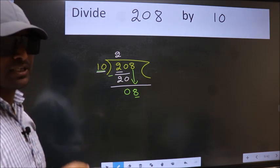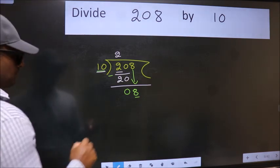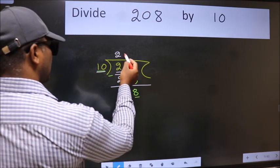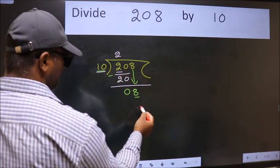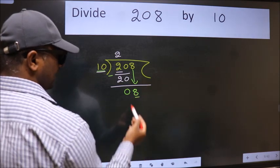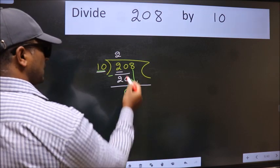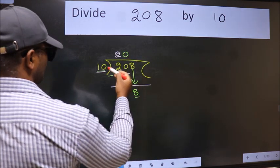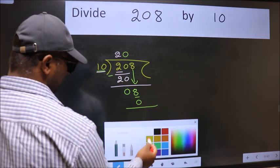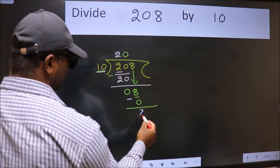Instead of that, what we should think of doing is: which number should we take here? If I take 1, we will get 10, but 10 is larger than 8. So what we do is we take 0. 10 into 0 is 0. Now we subtract and get 8.